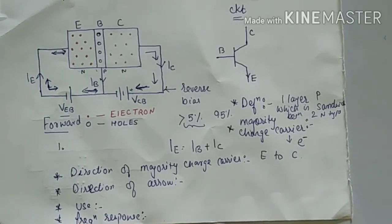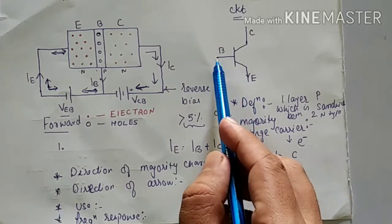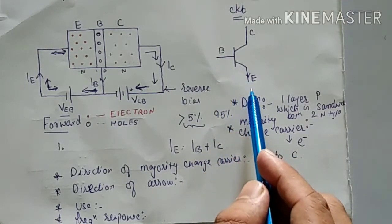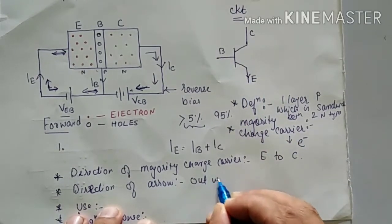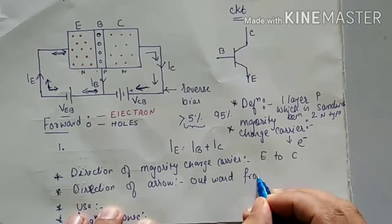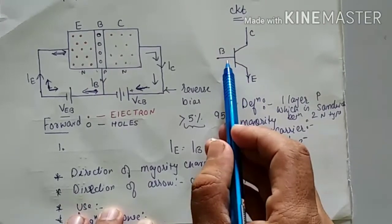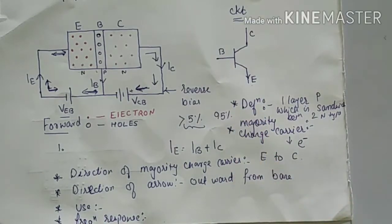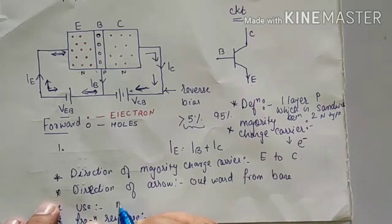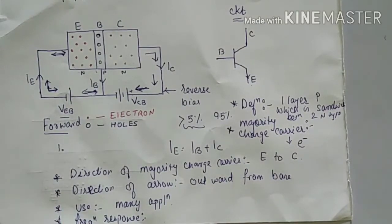Now, the direction of the arrow in the circuit symbol — the arrow is pointing outward from the base, away from the base toward the emitter, as you can see in the circuit symbol diagram. As for its uses, the NPN transistor is used in many applications of electronic circuits. We can say that almost every circuit uses an NPN transistor.